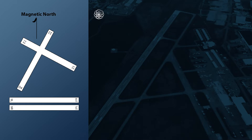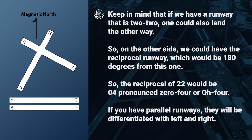Keep in mind that if we have a runway that is 22, one could also land the other way. So on the other side, we could have the reciprocal runway, which would be 180 degrees from this one. The reciprocal of 22 would be 04, pronounced 'zero-four.' If you have parallel runways, they will be differentiated with left and right.